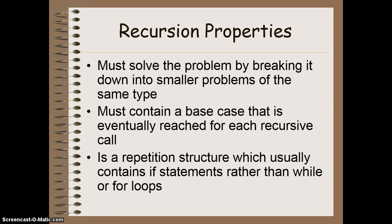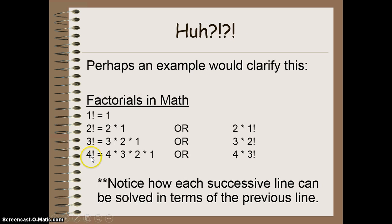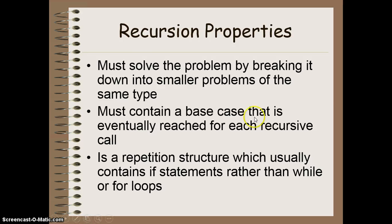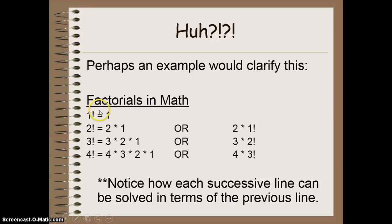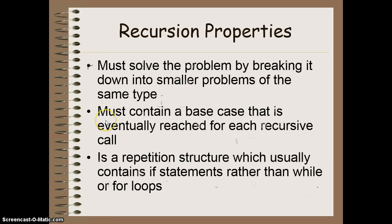But what would this look like using code? Well, to code this, we have to have a method, and the method must solve our problem by breaking it down into simpler problems of the same type. To solve 4 factorial, I have to break it down into something simpler, which would be 4 times 3 factorial. Then I take that 3 factorial, which is the same method again, and solve it by making it simpler — 3 times 2 factorial, and so on. In a recursive method, I must have a base case that is eventually reached for each recursive call. In this example, my base case is 1 factorial. 1 factorial, by definition, is 1 — I cannot simplify this any further. All of my other factorial methods are going to be called moving towards getting to that base case. This makes a repetition structure, but instead of using while and for loops, it's going to call itself over and over again by using if statements.